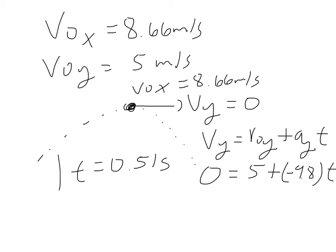The time to reach maximum height is 0.51 seconds. We found that because the final velocity along y equals zero, the initial velocity along y equals 5, and we have an acceleration because we are in freefall. Setting up the equation: zero equals 5 plus negative 9.8 multiplied by the time, we get a time of 0.51 seconds.